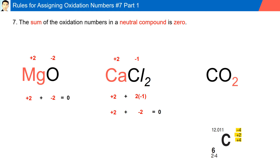Carbon dioxide: carbon can have multiple oxidation states — for example, minus four, plus two, or plus four. Let's work it out: oxygen has a minus two charge and there are two of them, which gives a net charge of minus four. Therefore, carbon has an oxidation number of plus four.